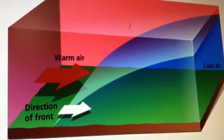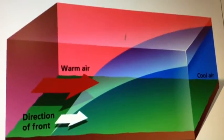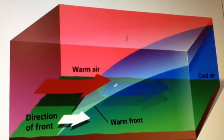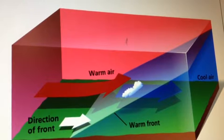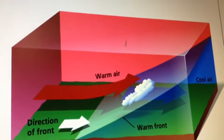A warm front occurs when a slowly moving warm air mass collides with a slowly moving cold air mass. Because cold air is denser than warm air, the warm air rises over the cold air.